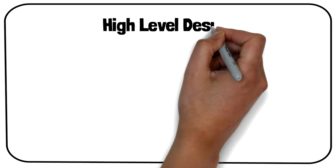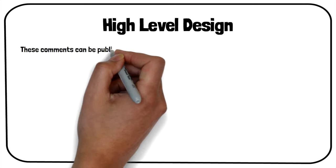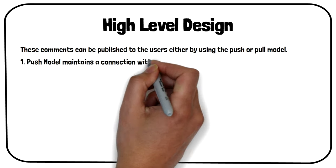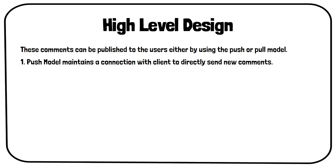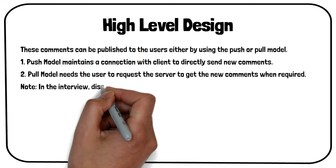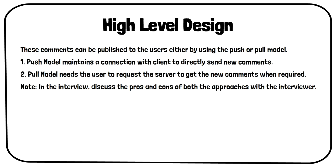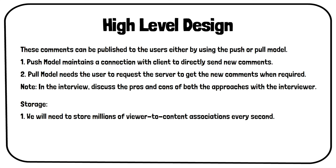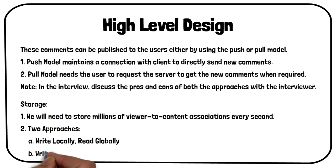Now, let us look at the high-level design of this system. These comments can be published to the users either by using the push or pull model. As discussed in the first question, the push model, also called fan-out-on-write, maintains a connection with the client and sends the new comments directly to the user. The pull model, also known as fan-out-on-load, needs the user to request the server to get the new comments when required. In the interview, we will need to discuss the pros and cons of both approaches. Also, we will have millions of viewer-to-content associations every second, and keeping up with them will not be easy. We will need to design an efficient way to store these associations, and discuss whether we will write locally and read globally, or write globally and read locally.